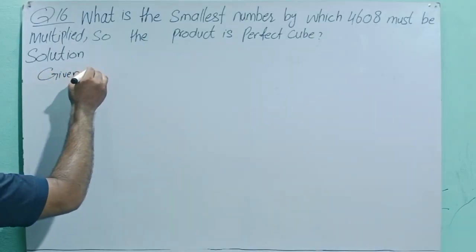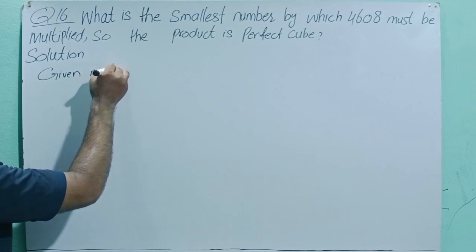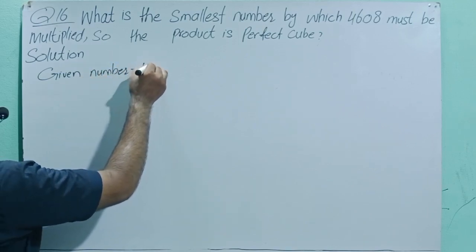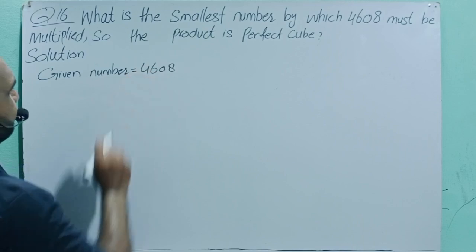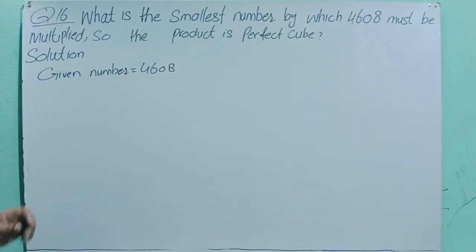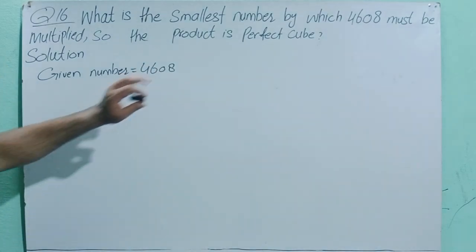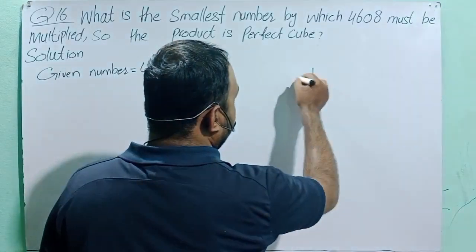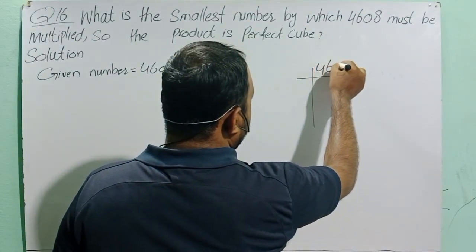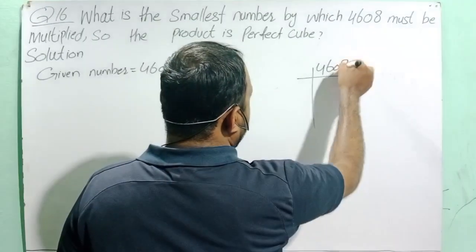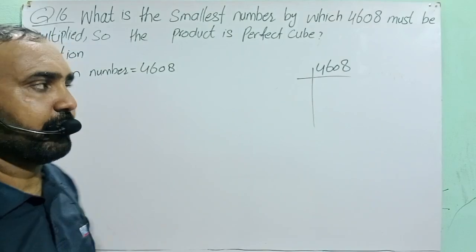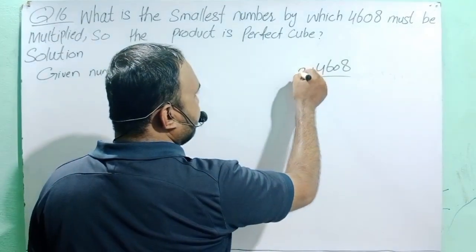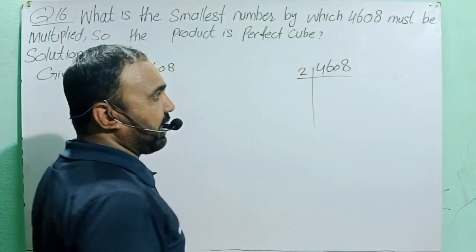Given number equals 4608. We are making the prime factorization. This is an even number, so first of all we divide by 2, which is the smallest prime number.